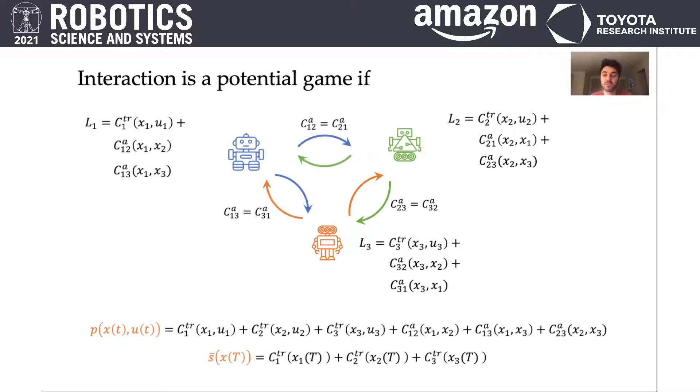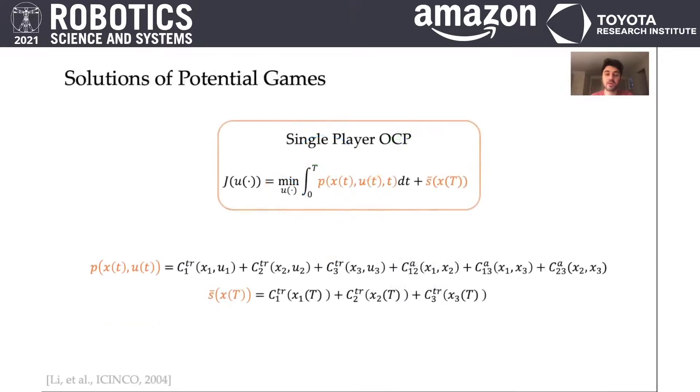In which case, we can write down the potential function p as the sum of the tracking cost of all agents, plus the sum of the pairwise collision avoidance costs. Similarly, we can write down the terminal potential as the summation over the agent's terminal tracking costs.